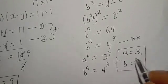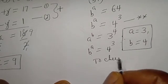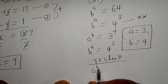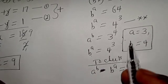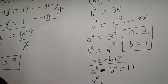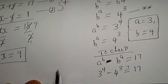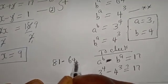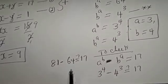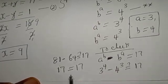This is the final answer. Let's verify: the original equation is A raised to power B minus B raised to power A equals 17. With A equals 3 and B equals 4: 3 raised to power 4 minus 4 raised to power 3 equals 81 minus 64, which equals 17. This is true, confirming our answer is correct.